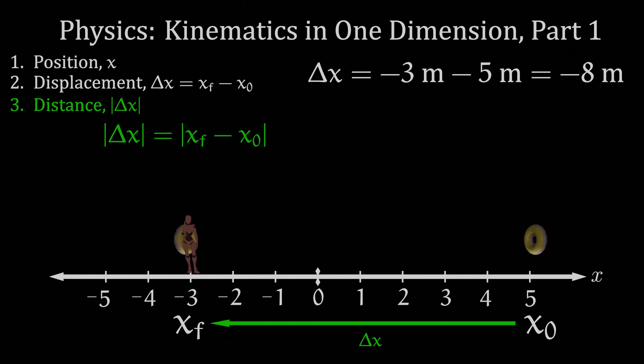However, the distance traveled from the first donut to the second donut is a positive eight meters because absolute values are always positive.